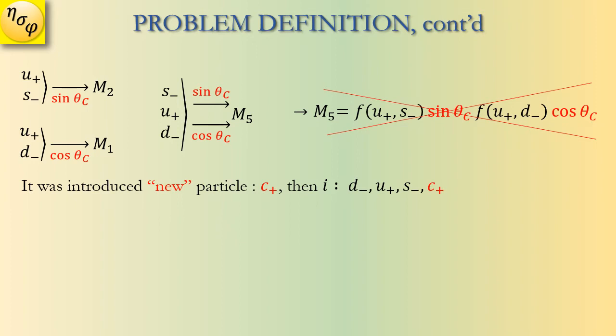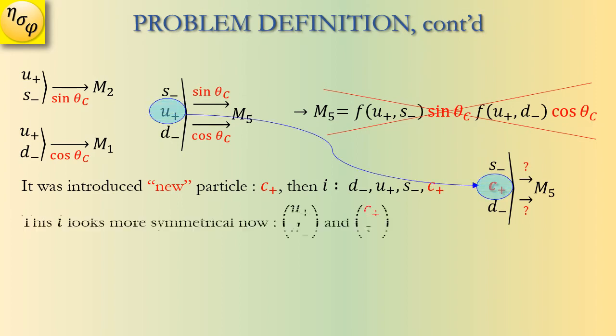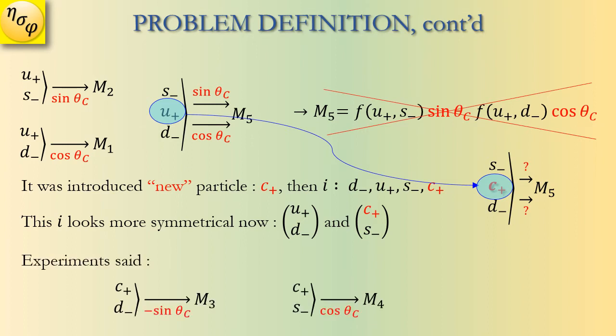To solve this problem, some physicists suggest introducing a new particle c-plus. c-plus will replace u-plus. Now there are four inputs: d-minus, u-plus, s-minus, and c-plus, and it looks more symmetrical. Finally, the experiments said that minus sine(theta-c) and cosine(theta-c) must be the factors for this new particle c-plus.